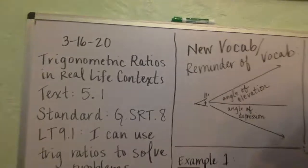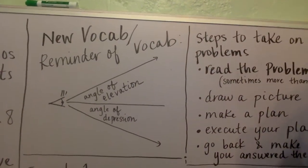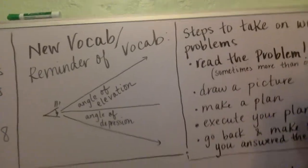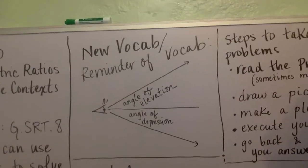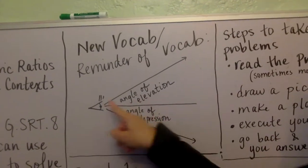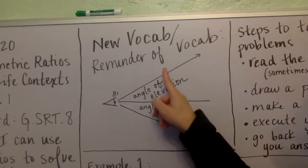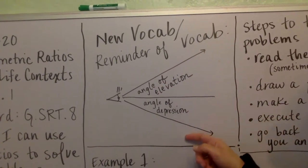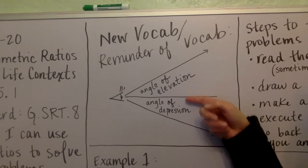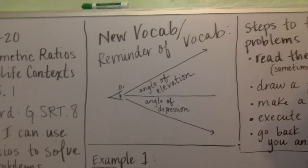Let's remember some vocabulary. This is supposed to be your eyeball. If you're looking straight out and you have to look up at something, we call that the angle of elevation in a word problem. And from your line of sight, if you end up looking down at something, this angle from your line of sight looking down is called the angle of depression. Pause if you need to get the notes.